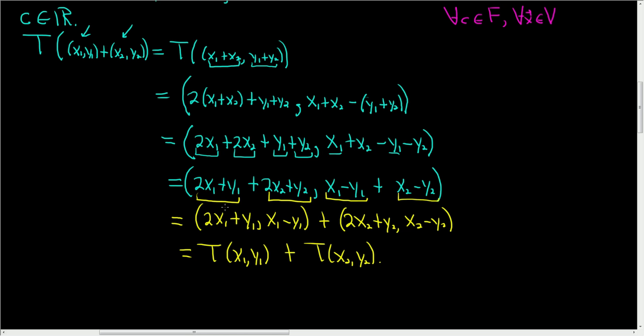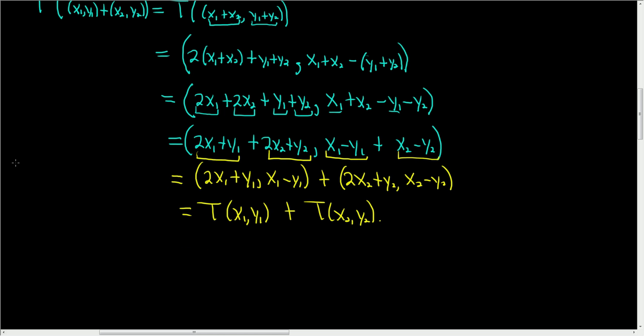Let me go ahead and write down T down here again for clarity. So T of xy was parentheses 2x plus y comma x minus y. That's how we were able to make this step here.